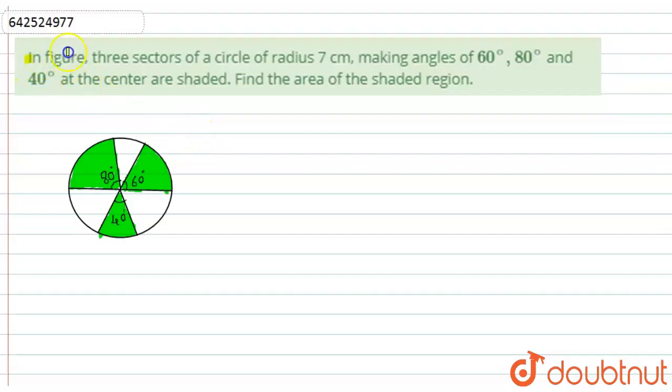Here we have given in the figure three sectors of a circle of radius 7 centimeters, making angles of 60 degrees, 80 degrees, and 40 degrees at the center are shaded. Find the area of the shaded region.